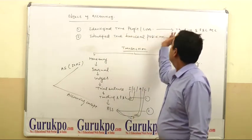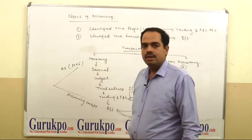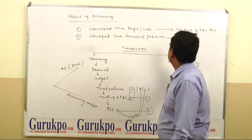For achieving the first object, trader makes trading and P&L account and for achieving second object, trader makes balance sheet.